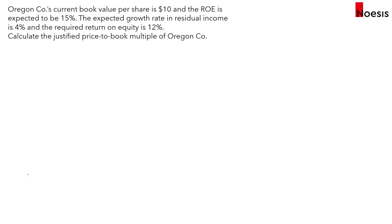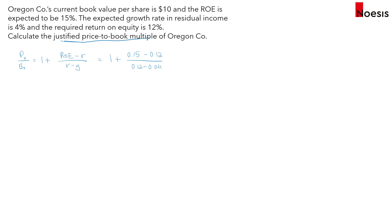Let's calculate the justified price-to-book multiple for Oregon Call using the same numbers. Using the formula: 1 plus (ROE minus R) divided by (R minus G) — that is, 1 plus (15% minus 12%) divided by (12% minus 4%).